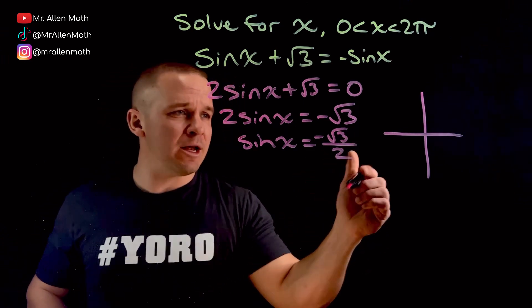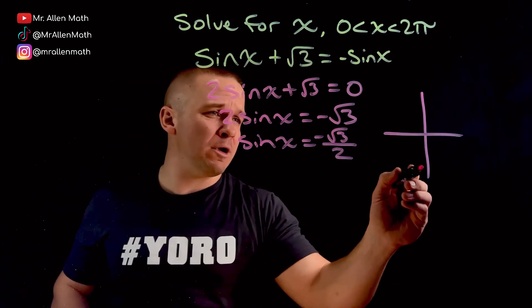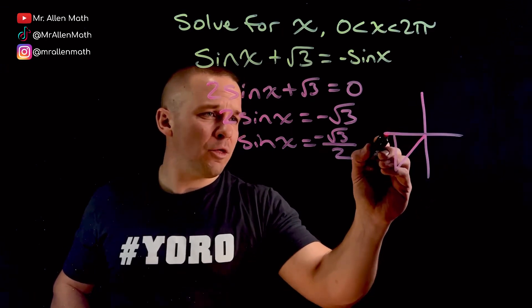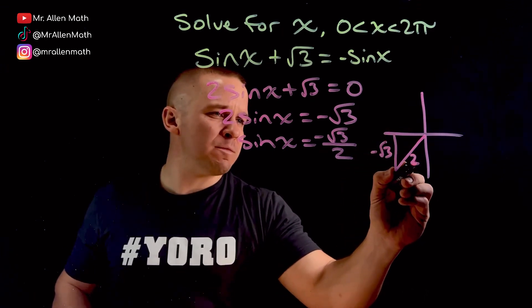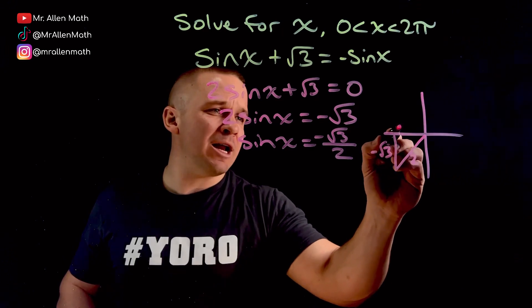We've got opposite over hypotenuse, right? So my opposite side is negative root 3. That would mean I'm in the third quadrant over here. Negative root 3. 2 is my hypotenuse. And I'm going to have a negative 1 right here.